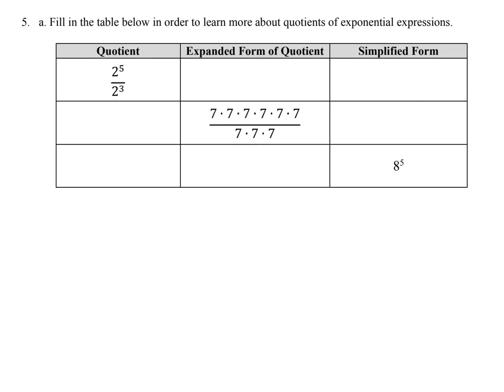Number 5 — we want to look at quotients. 2 to the 5th power is 2 multiplied by itself 5 times, and 2 to the 3rd power is 2 multiplied by itself 3 times. These can divide to become 1 — anything divided by itself is 1 — leaving us with 2 to the 2nd power. Similarly, in the second problem, that's 7 times itself 6 times on top and 7 times itself 3 times on the bottom, so those cancel, leaving us with 7 times itself 3 times.